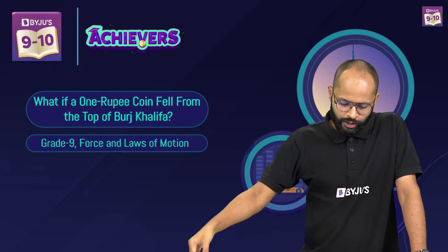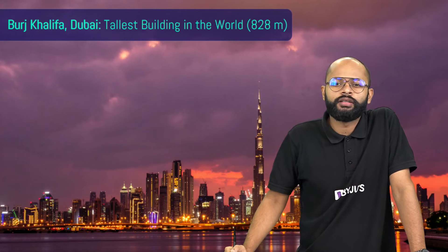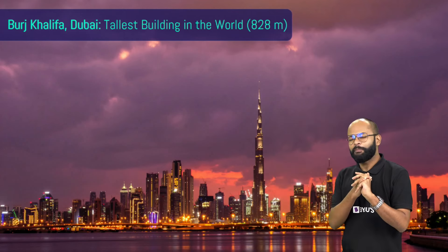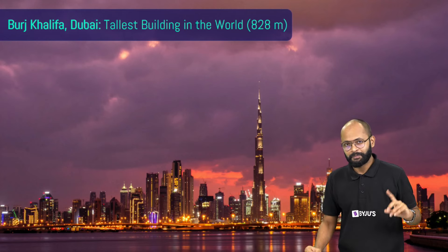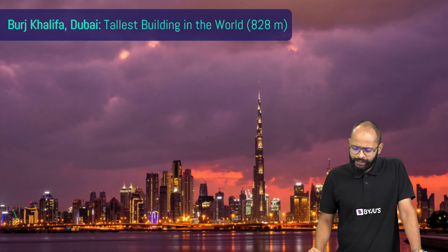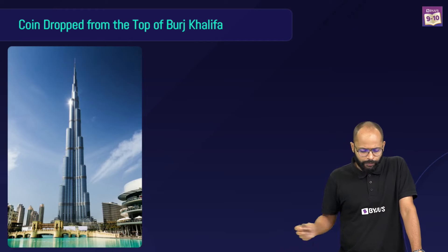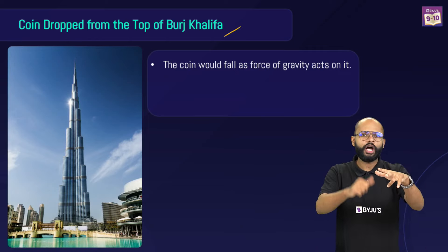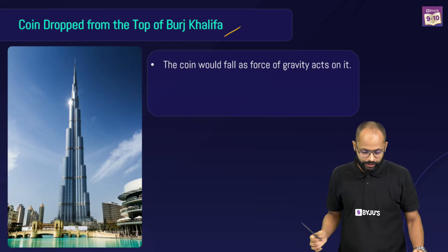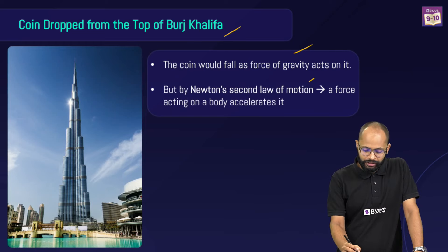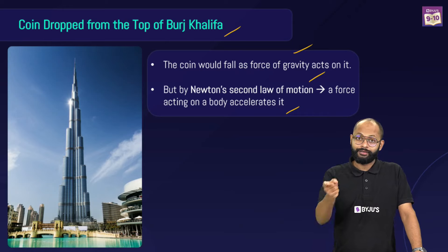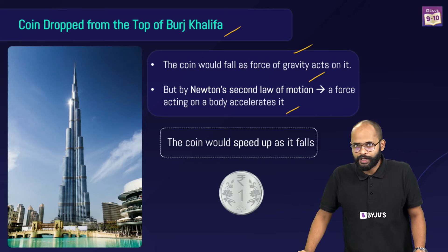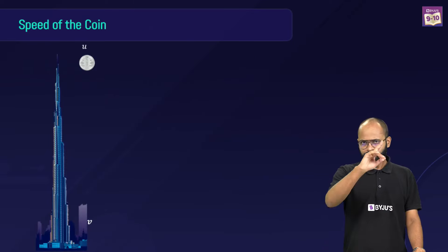Burj Khalifa is the tallest building in the world, located in Dubai at 828 meters — about 11 times taller than Qutub Minar in Delhi. If we drop a coin from the top, the force of gravity acts on it with an acceleration of 9.8 m/s². By Newton's second law of motion, the force accelerates the coin, so its speed will keep increasing as it falls.